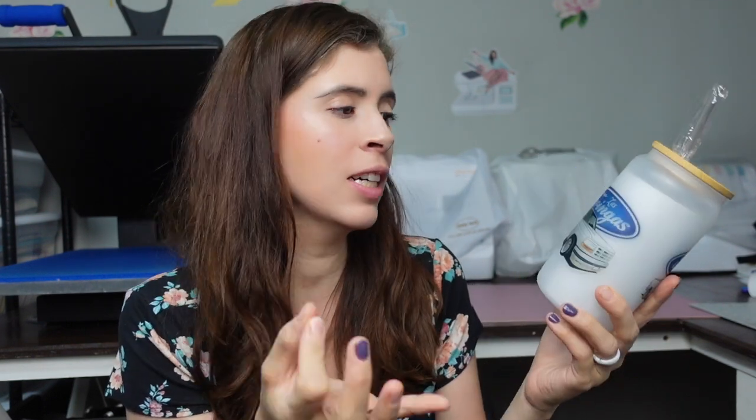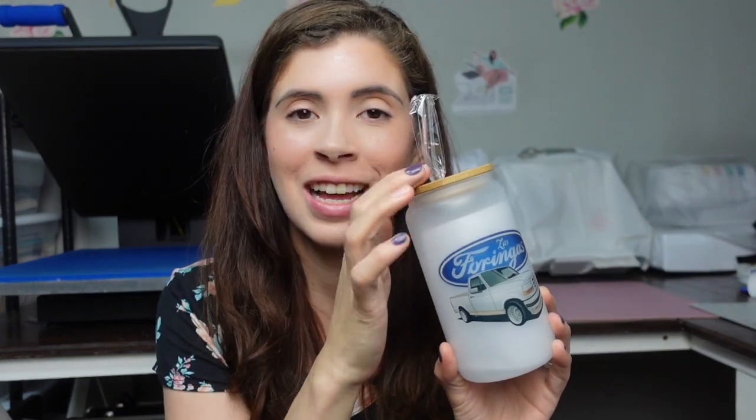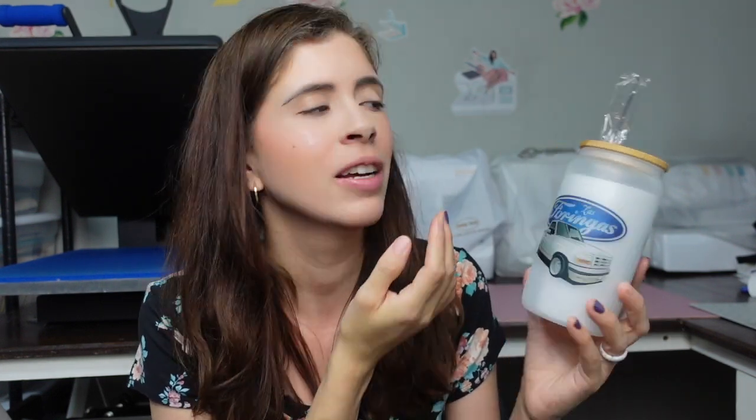In today's video I'm going to be showing you how to sub on a glass frosted tumbler. These frosted tumblers are from Koala, I'll have them linked down below. They come with a nice glass straw which I love, because most of these come with a metal straw. There's something about the glass straw that just makes it really nice.